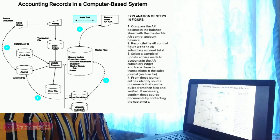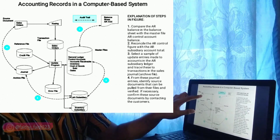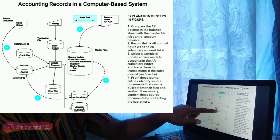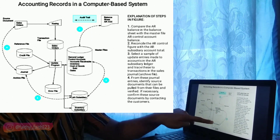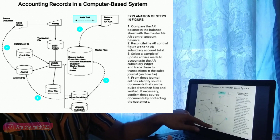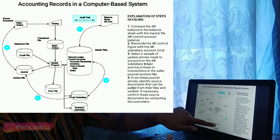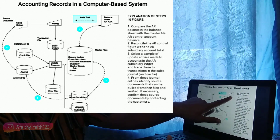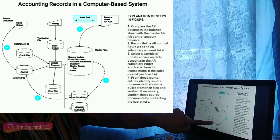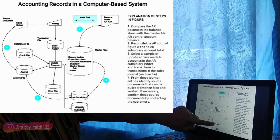Accounting records in a computer-based system: let's go through the flowchart. From a customer order, it goes to the transaction file for updating, then to the master file. Upon order, an accounts receivable entry is created. The inventory subsidiary is also updated. Balances flow from the SL to the GL, which links to the balance sheet AR. So from balance sheet to GL to SL to journal, and back to sales order — or from sales order to journal to AR SL to GL to balance sheet — either way.